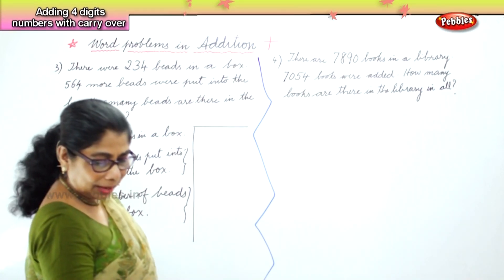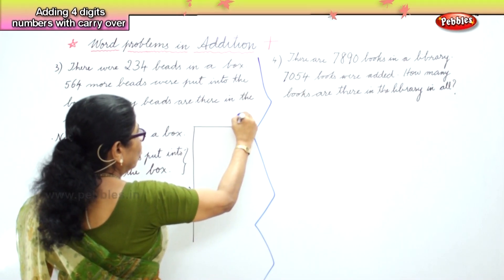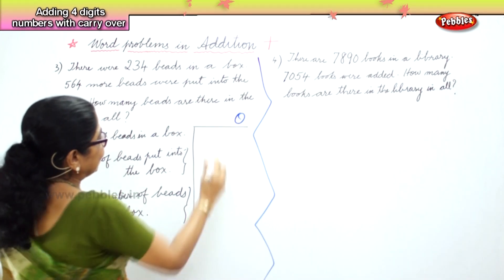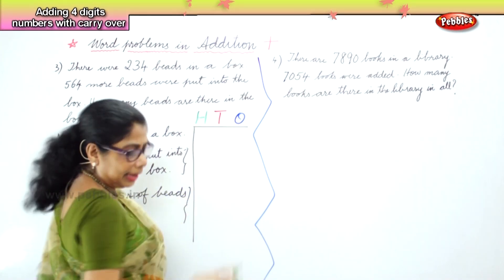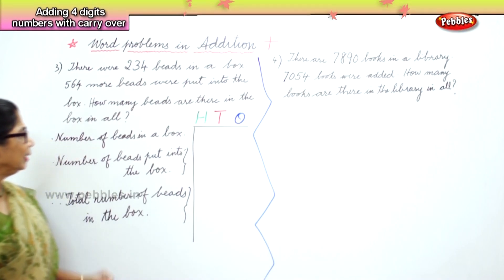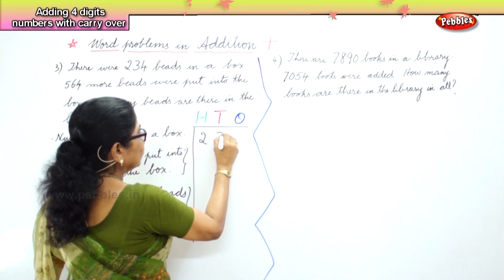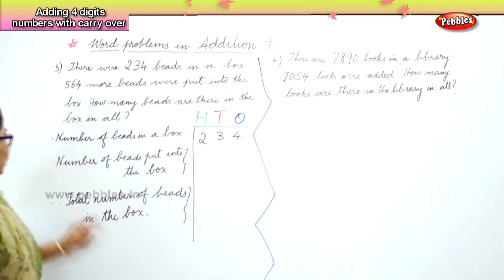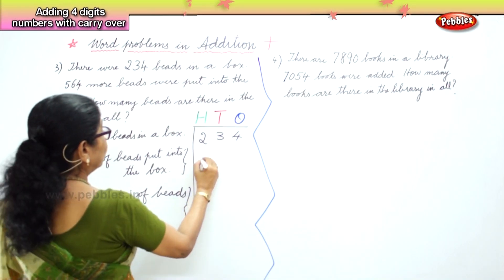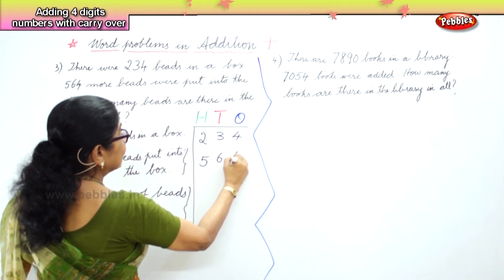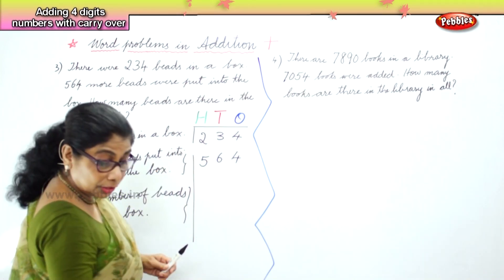Now we are going to set up the box. We have to write every time: O for ones, T for tens, and H for hundreds, so that we do not make a mistake. Number of beads in the box is 234. Number of beads put into the box is 564. And what do we do? We add — so we put the addition sign here.